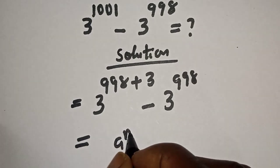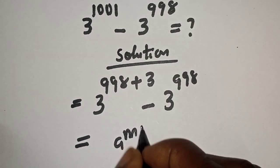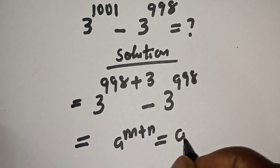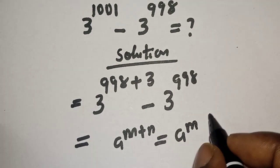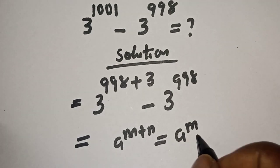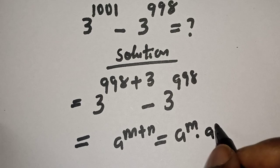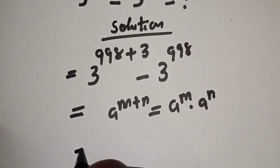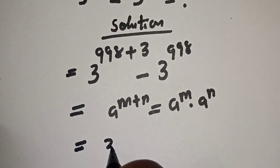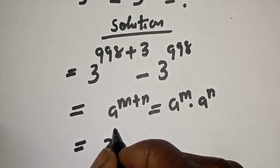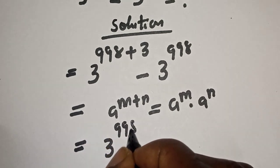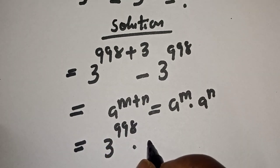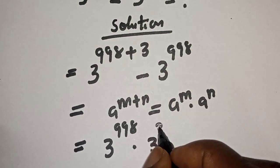Take note of this rule: if you have a raised to power m plus n, this is equal to a raised to power m multiplied by a raised to power n. And this is equal to 3 raised to power 998 multiplied by 3 raised to power 3.